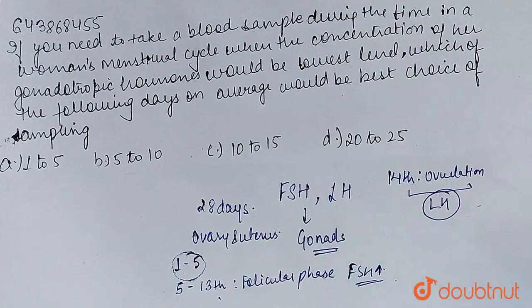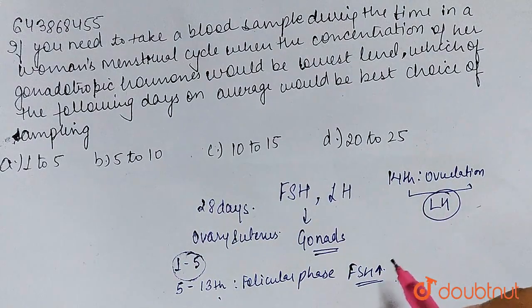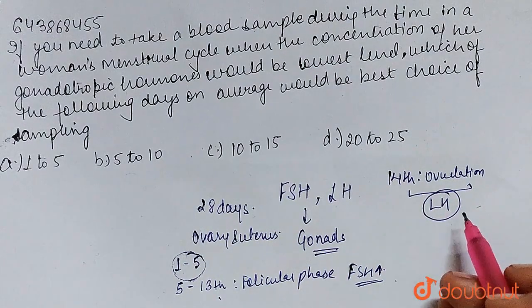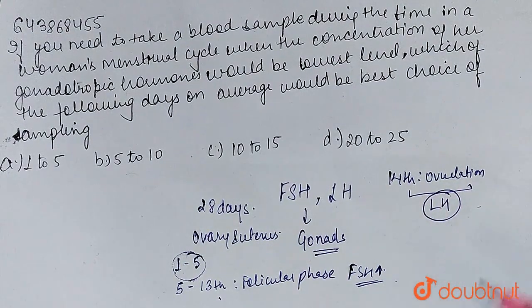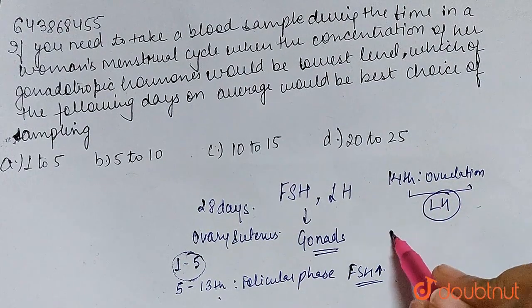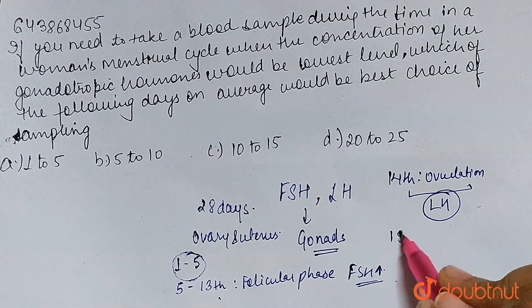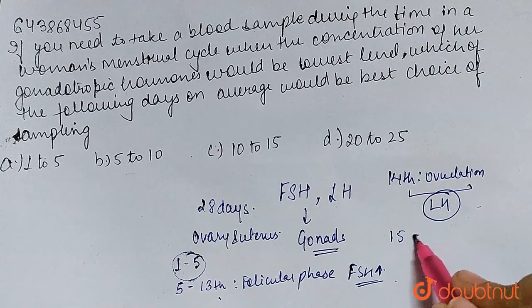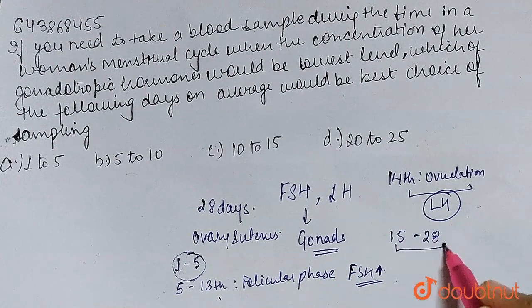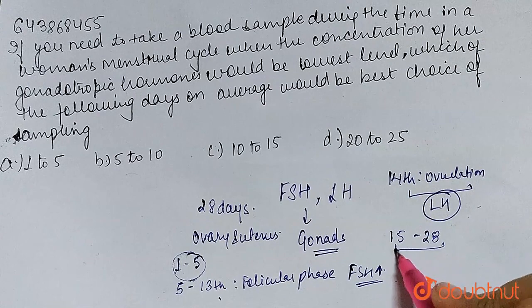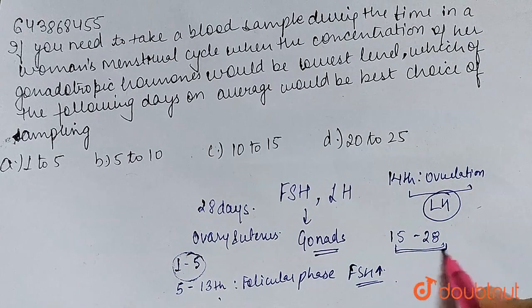At the time of ovulation, LH surges to its peak. After the 14th day ovulation, from days 15 to 28 is our luteal phase.